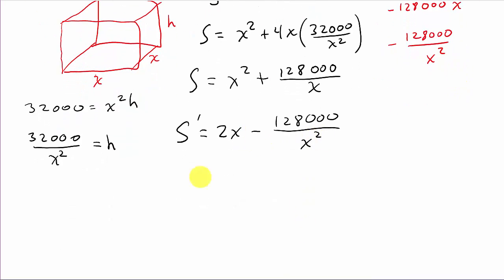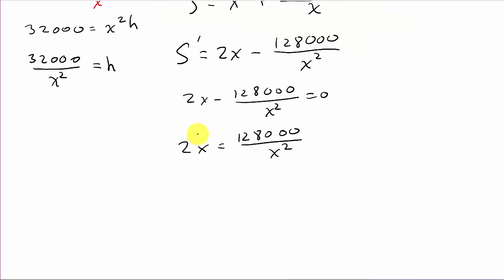Now let's set this equal to zero: 2X minus 128,000 over X squared equals zero. So 2X equals 128,000 over X squared. That gets moved up, so X cubed equals 128,000 divided by 2, which gives me 64,000. So X is the cube root of this, which comes out to 40 centimeters.